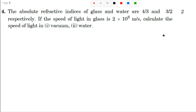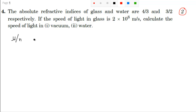It's a two-mark question, as you can see here. Whenever you are going to attempt a question, it is always advisable to write all the data which are given in the question. The symbol for refractive index is either mu or n — I'm going to use n here.